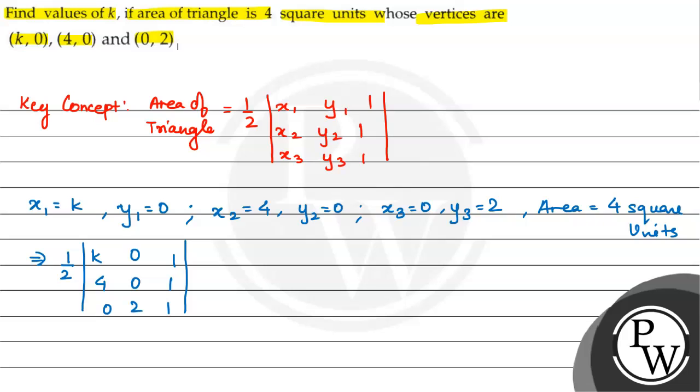We will expand along column 2. Expanding along C2, half multiply. When I hide column 2 and second row, I am left with k, 1, 4, 1.